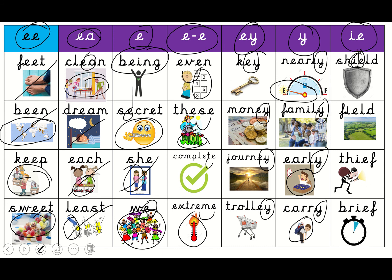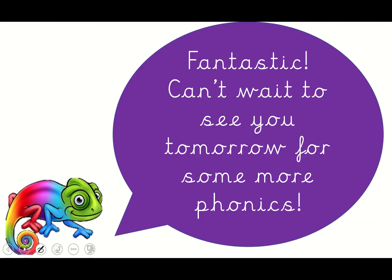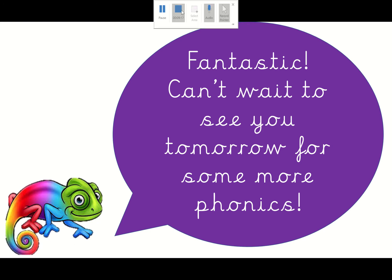And then let's look at I-E. So we have shield, we have field, we have thief — where someone's going to steal something — and we have brief — it's only happening for a very short amount of time, a brief amount of time. Well done. We can't wait to see you tomorrow. Bye-bye!